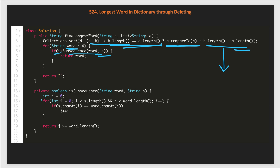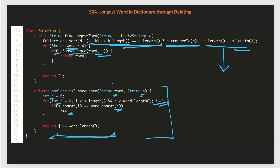The isSubsequence method uses a j pointer for the word and an i pointer iterating over string s. Whenever the character at index i in s equals the character at index j in the word, we increment j. Otherwise we just increment i. At the end, we return whether we found all characters of the current word in s from left to right.